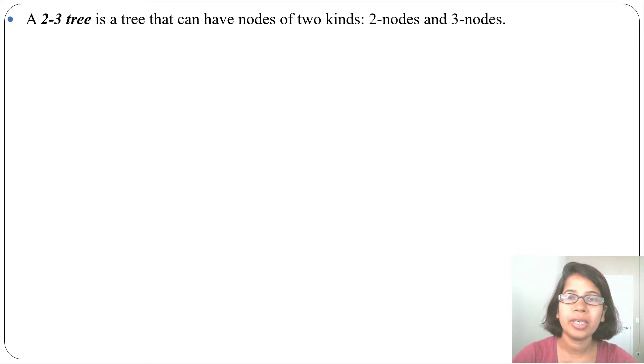Hi, let's discuss a 2-3 tree. A 2-3 tree is a tree where there can be either two nodes or three nodes. This means one node can contain two values or three values, and all leaves are at the same level.